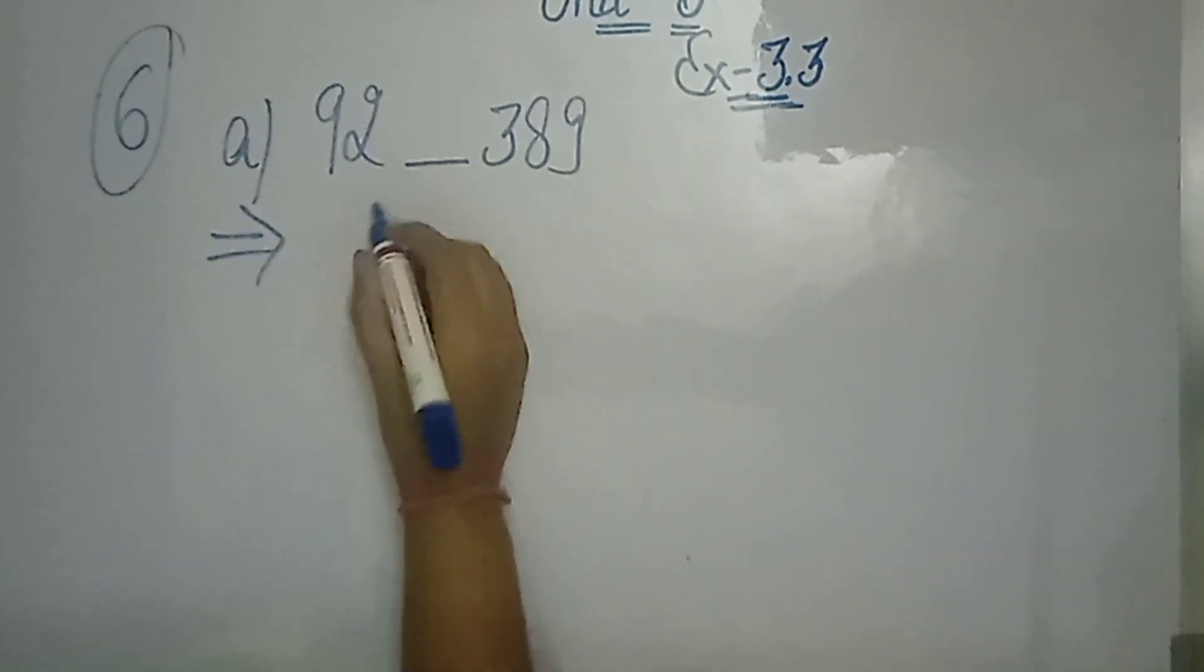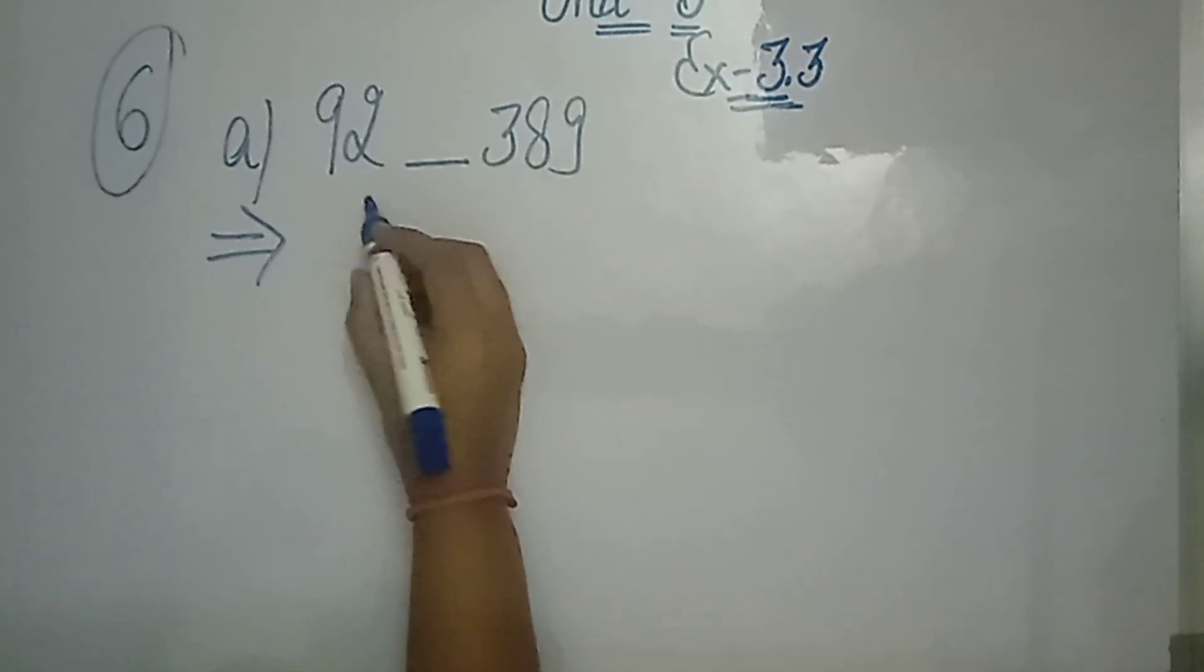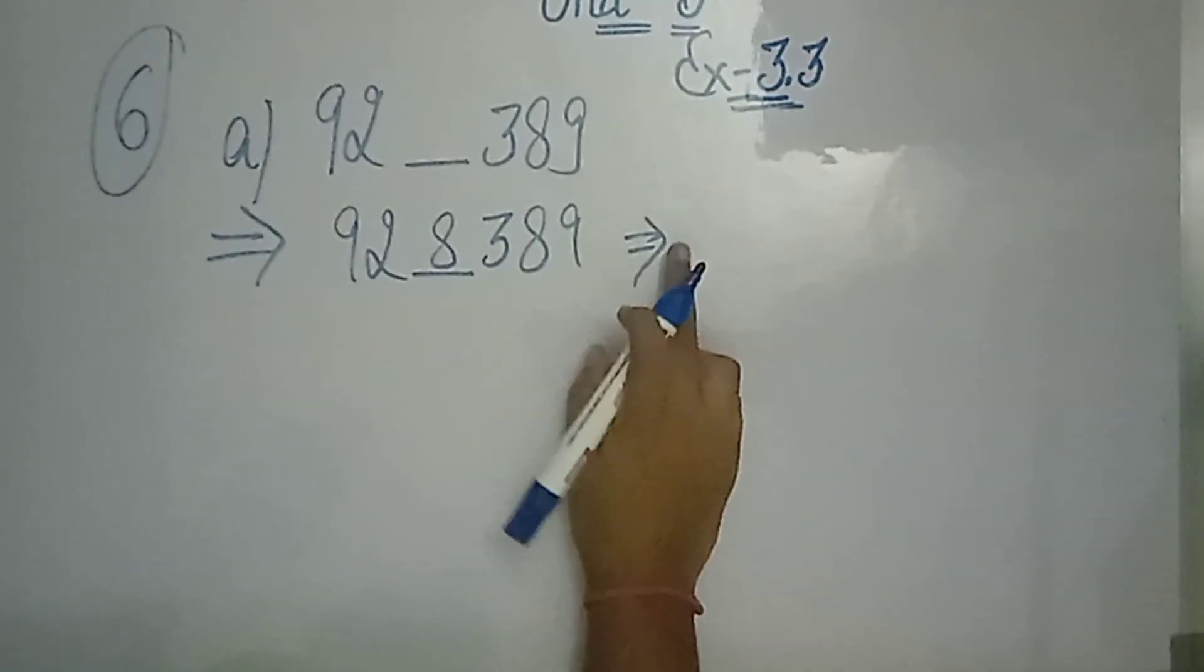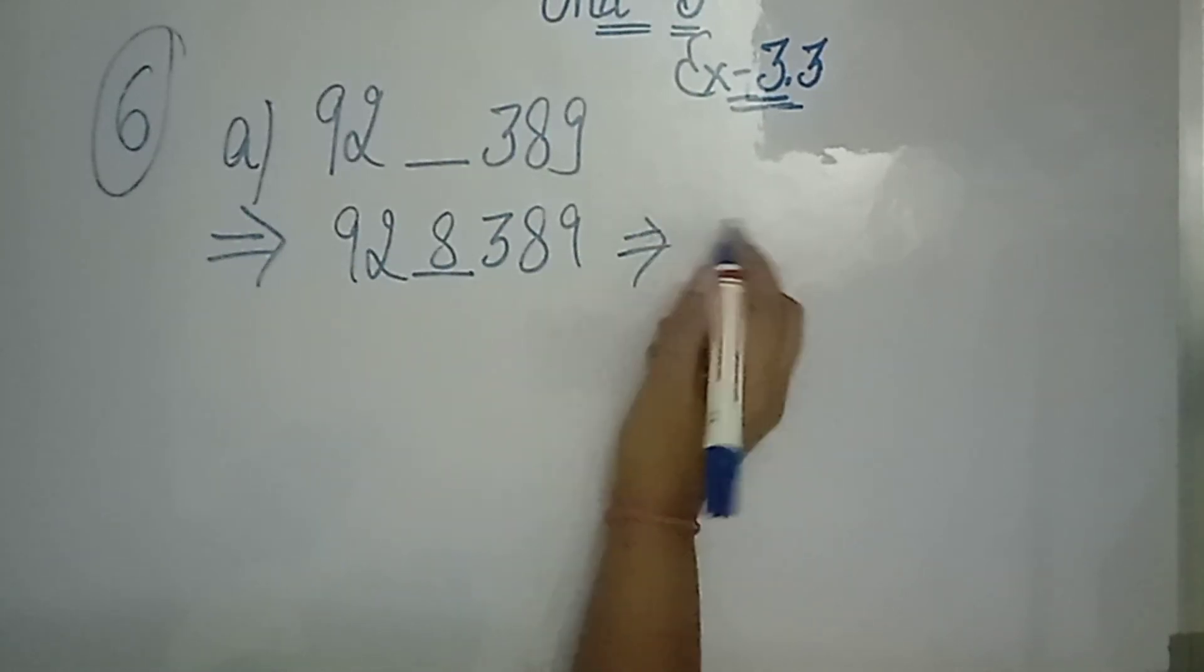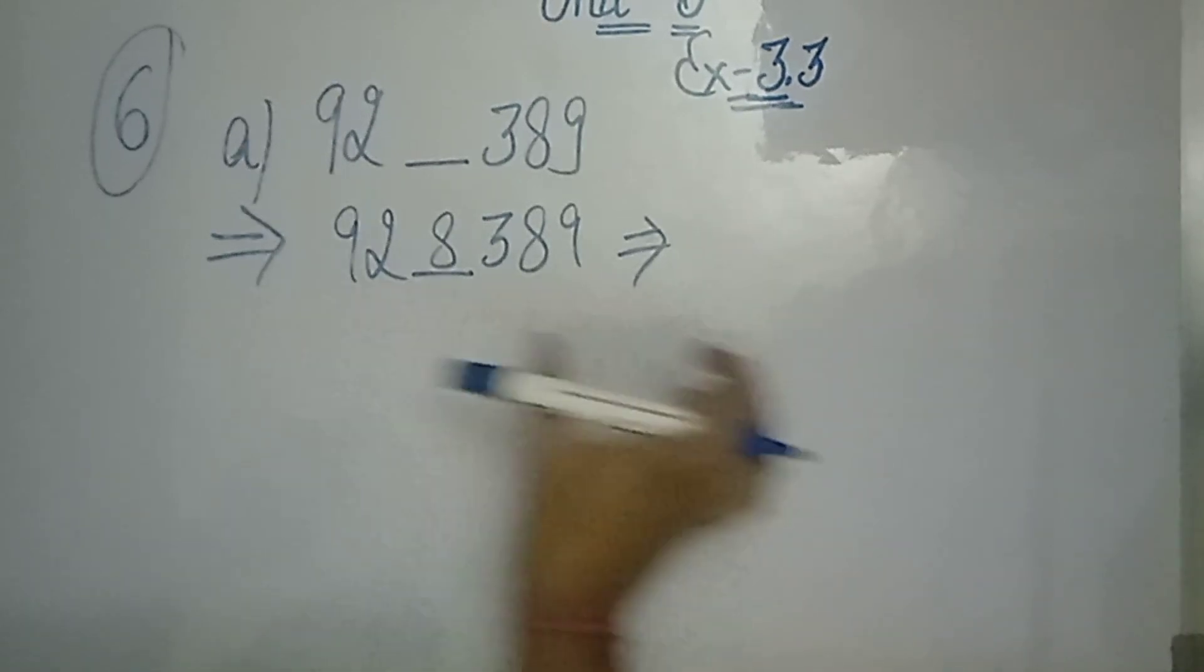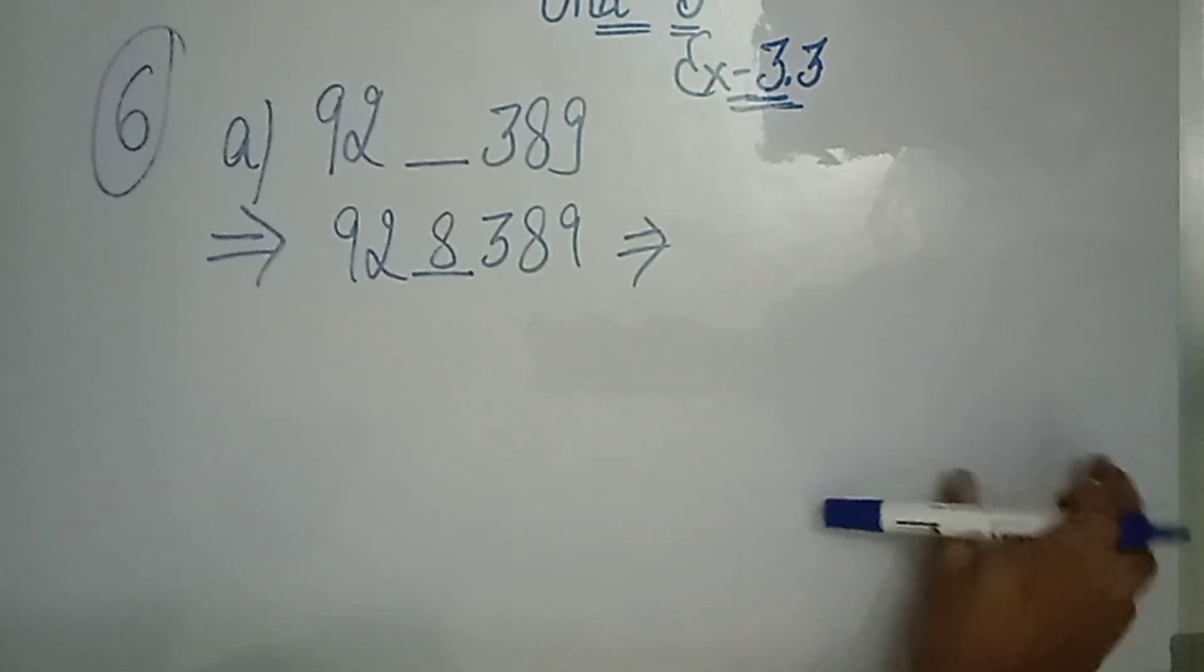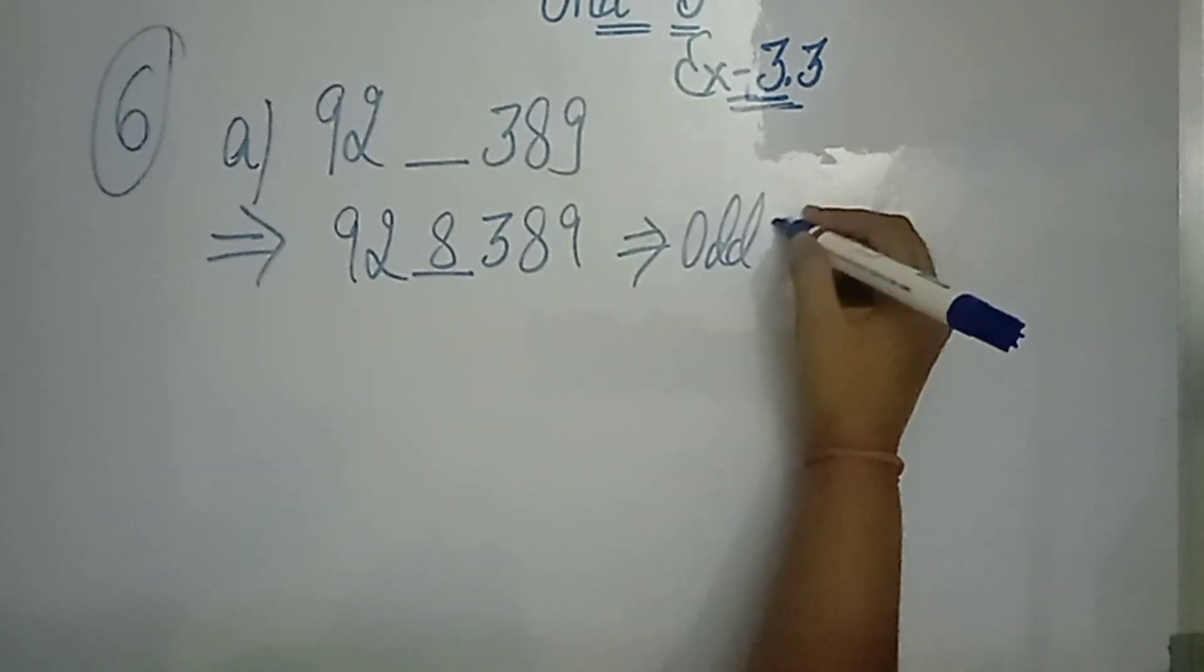Then how do we solve it? We don't have to solve it because we have 11. So 11 is an odd number. So what do we do? First, we will fill in the odd number, then we will fill in the even number. If the answer will come, then we will fill in the difference. If the difference is divisible by 11, then this number will be divisible. So let's check the odd places.